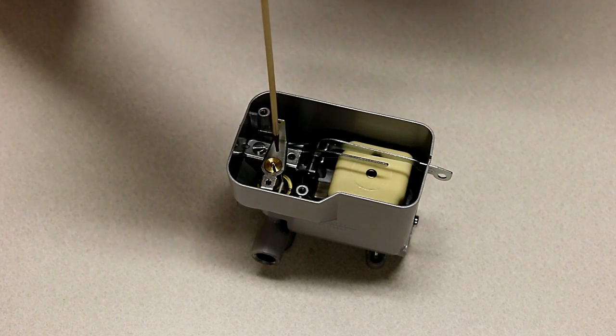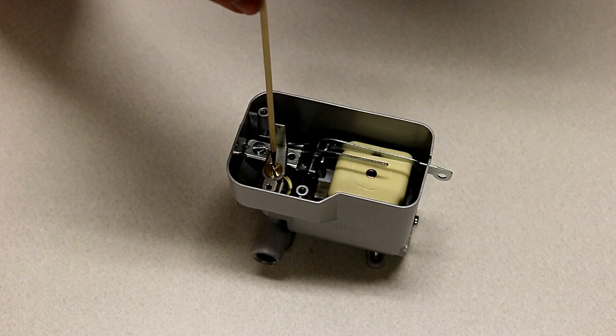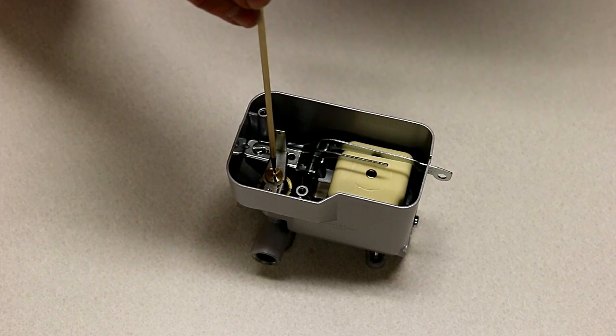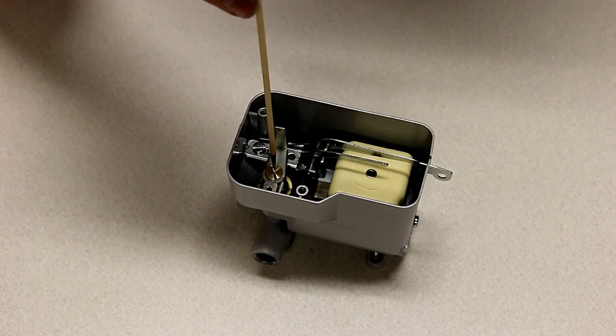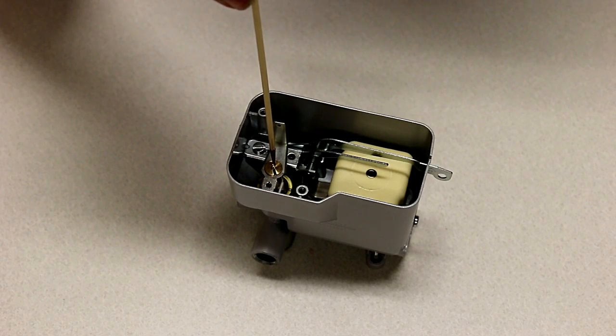When you turn the dial towards low, it pushes down on this and eventually will stop oil completely. When you rotate the dial towards high, it allows the metering stem to come up and delivers more oil to the burn pot.